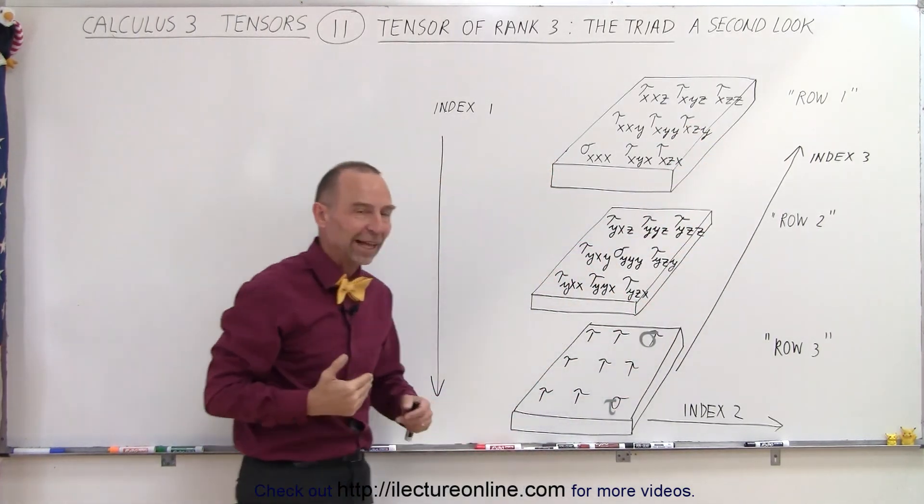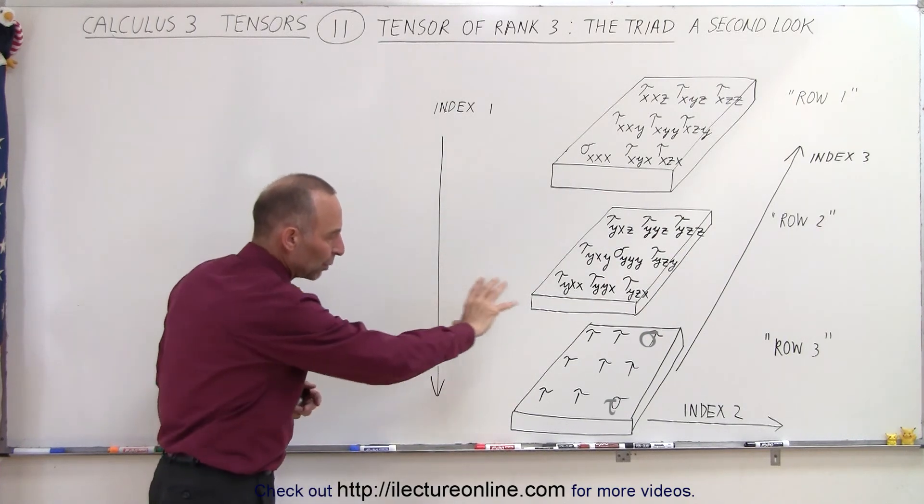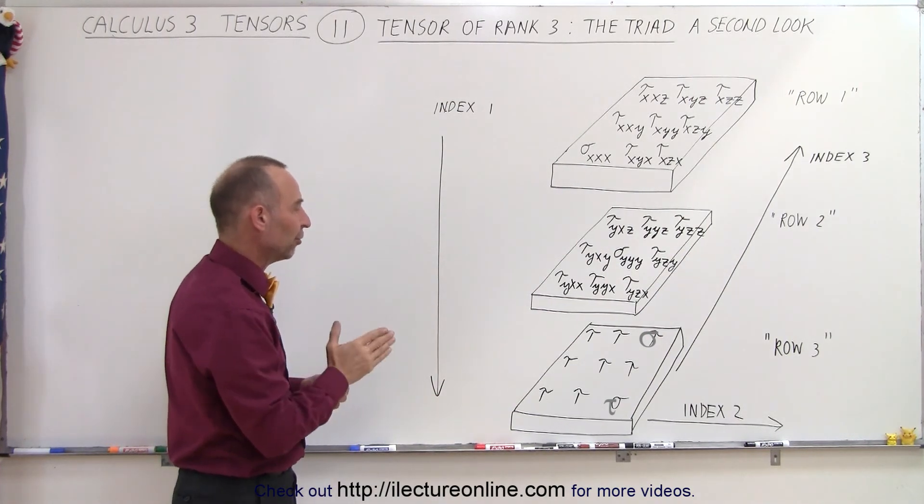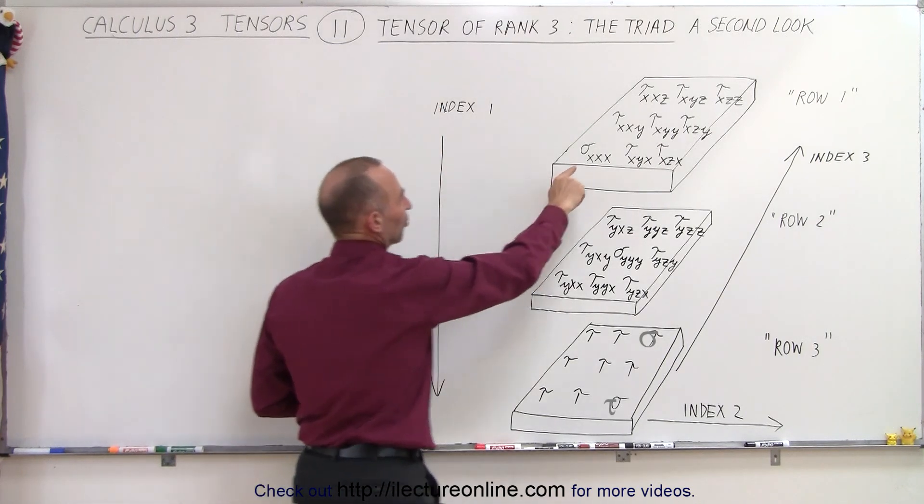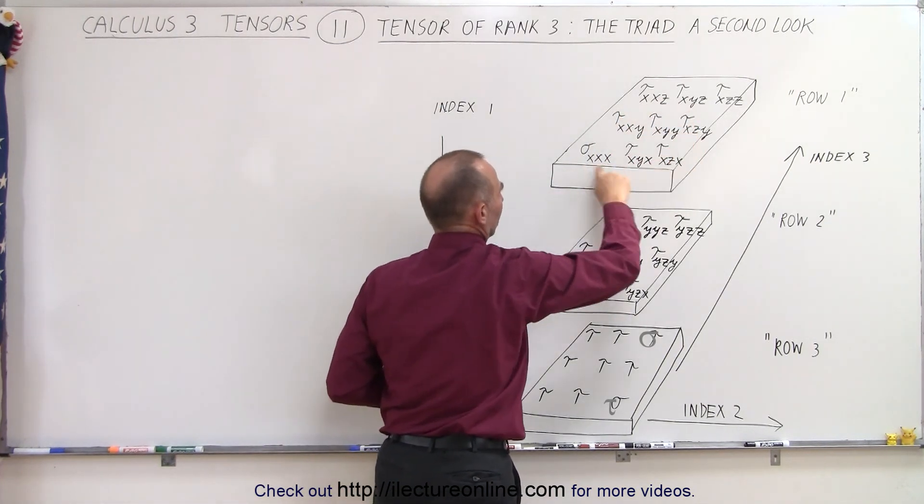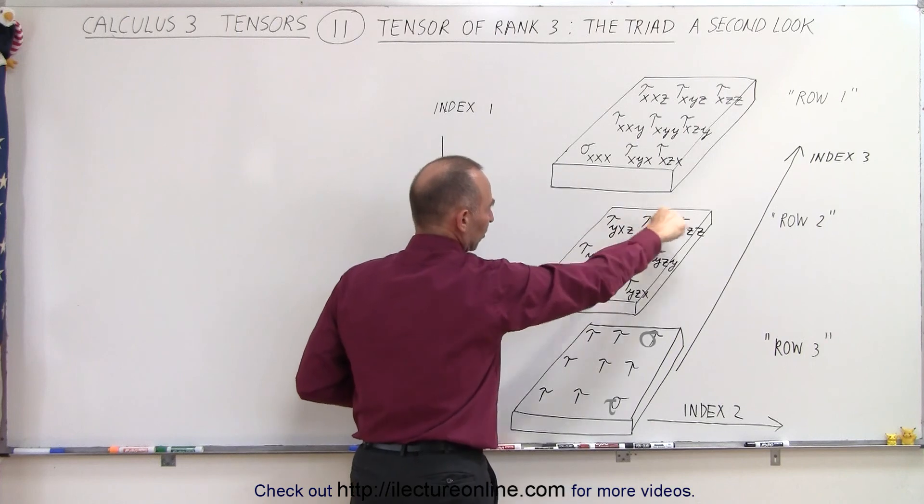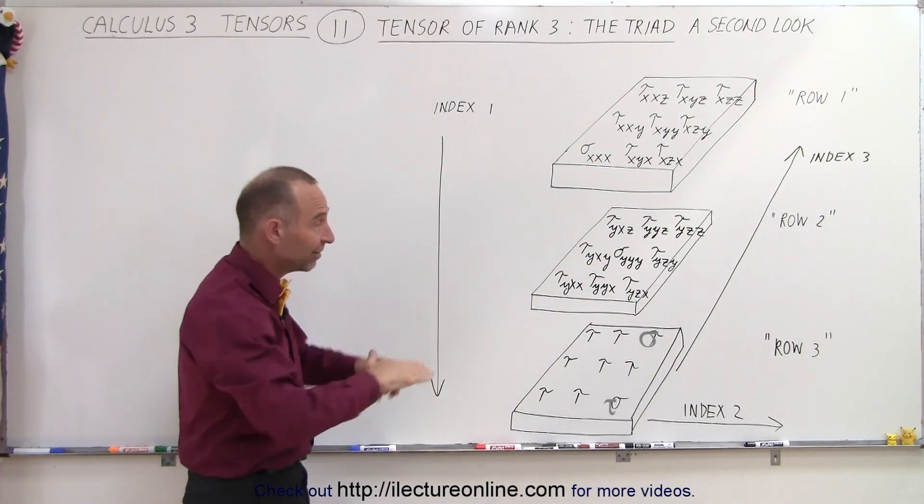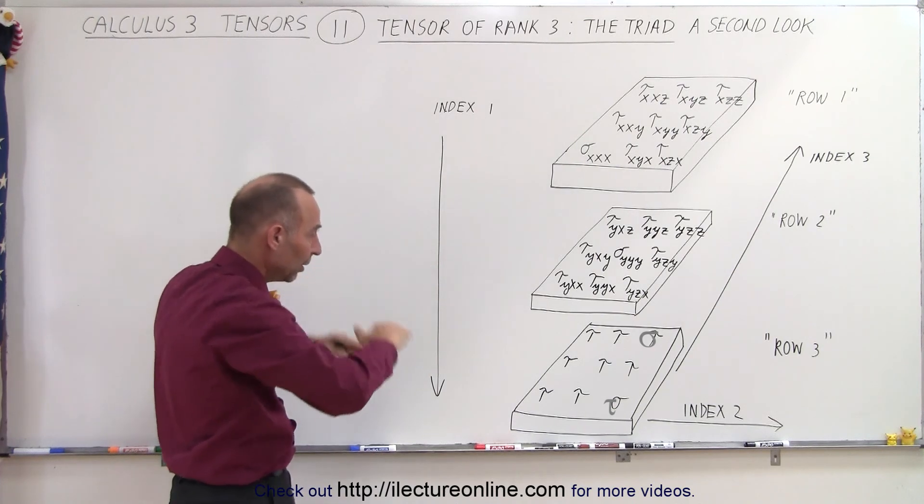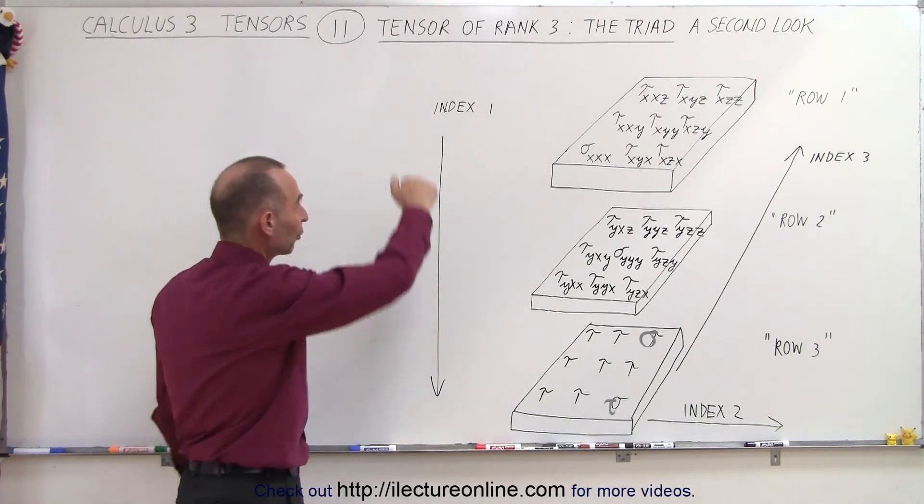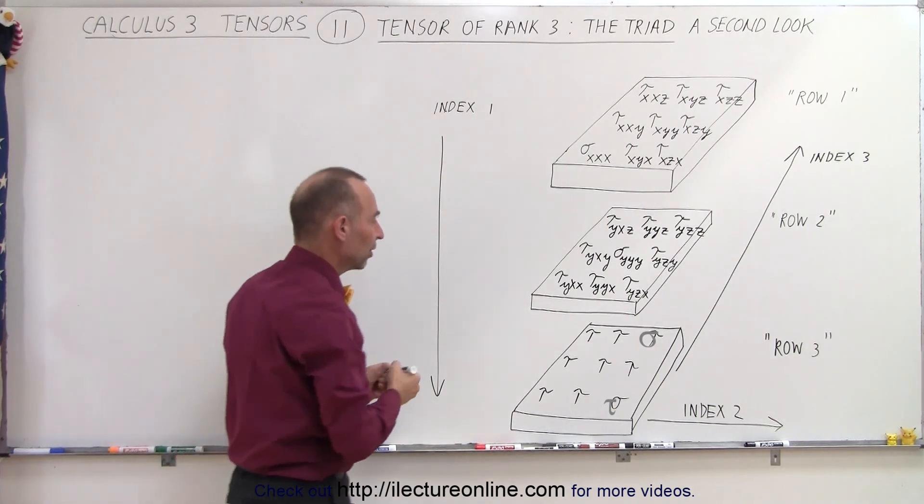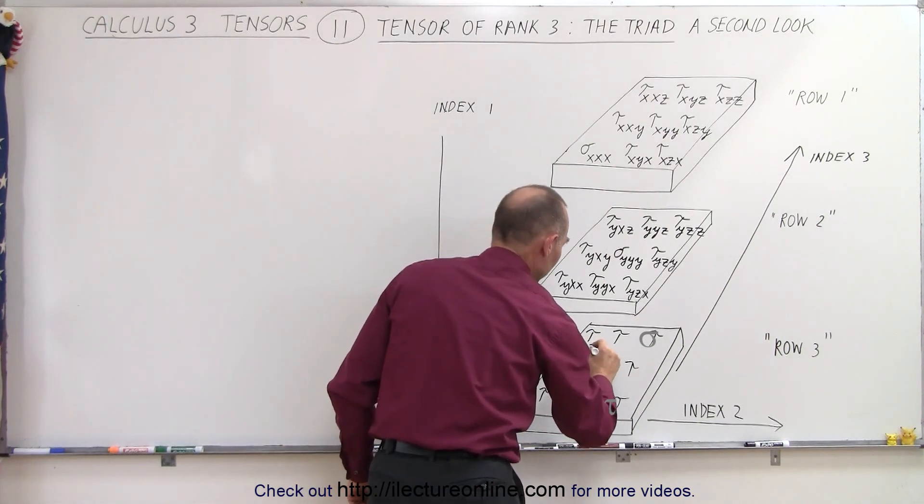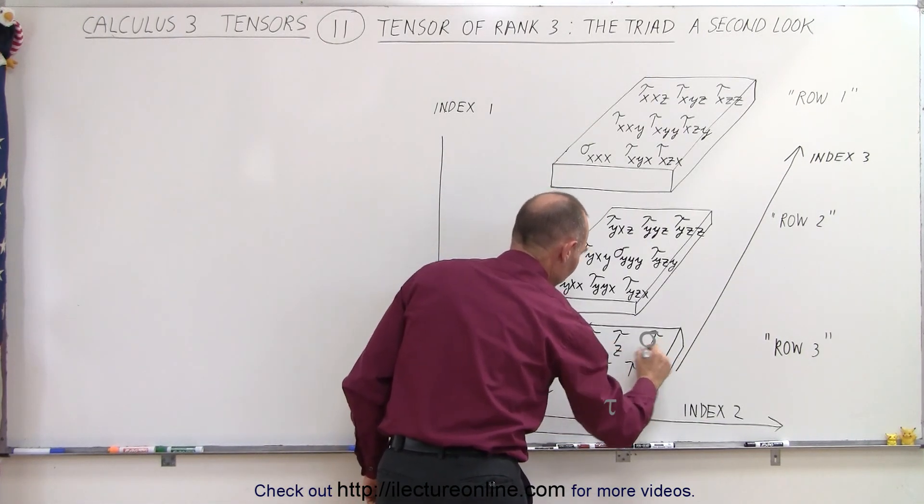It depends how you want to slice things. And so how do we write the subscripts here? First of all, when we go from top to bottom, the first subscript here, all the first subscripts here would be x's, all the first subscripts here would be y's, and therefore all the subscripts at the bottom here need to be z's, because we go from top to bottom. So everybody gets a z as the first index.